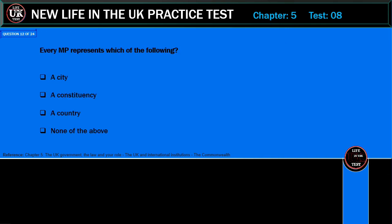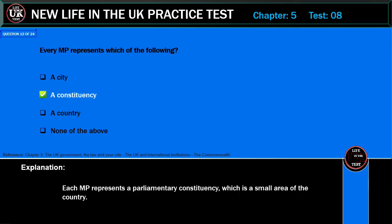Every MP represents which of the following? A city, a constituency, a country, or none of the above? Correct answer: a constituency. Explanation: Each MP represents a parliamentary constituency, which is a small area of the country.